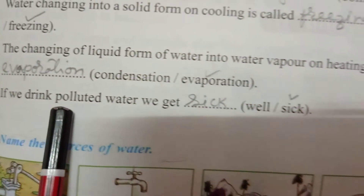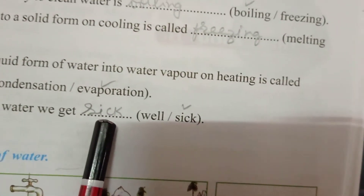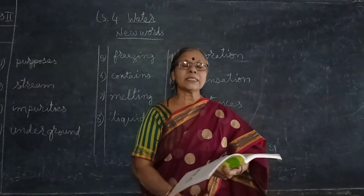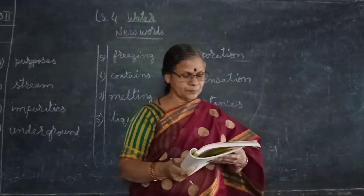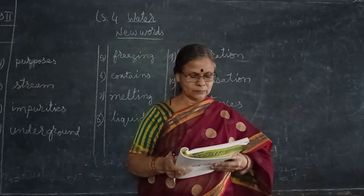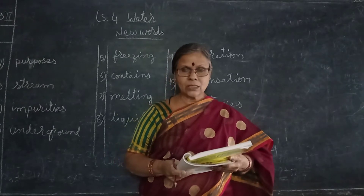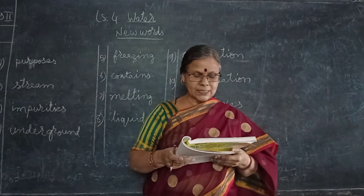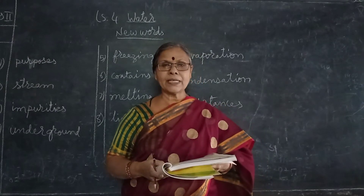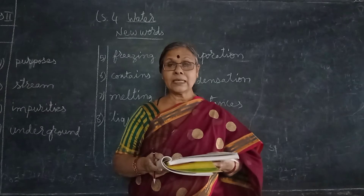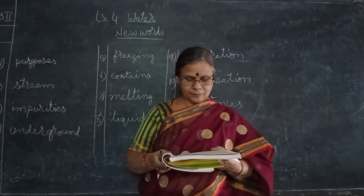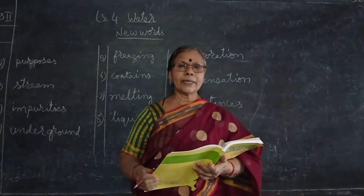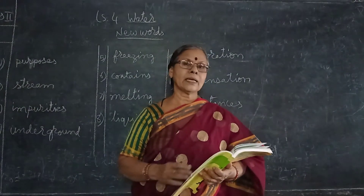Fifth is if we drink polluted water we get sick. So almost all the object type we have done. Once again I will read the answers of fill in the blanks: first is water, second is rain, third is ground water, fourth is boiling, fifth is ice, sixth is evaporation, seventh is condensation, eighth is water cycle, ninth is polluted water, tenth is solid, liquid and gas.